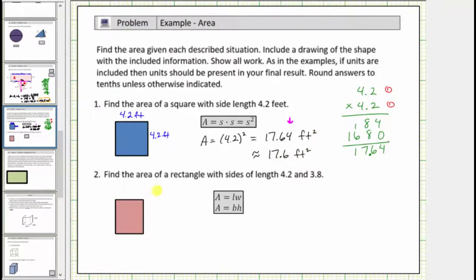For number two, we're asked to find the area of a rectangle with sides of length four point two and three point eight. Notice here we're not given units, but we can still label the area square units. Using this rectangle, we'll label the shorter length three point eight and the longer length four point two.